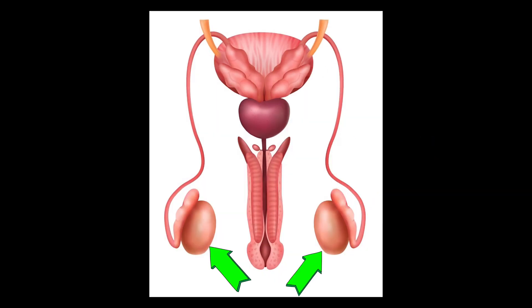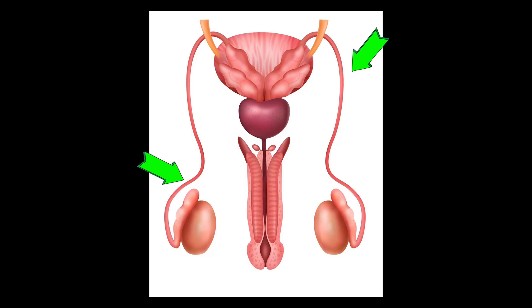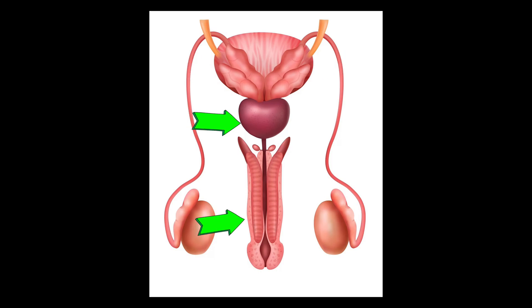The sperms are made in the testis. They travel through the epididymis and reproductive tract and mix with the fluid found in the seminal vesicle to make the semen.